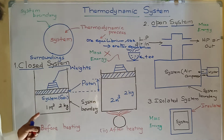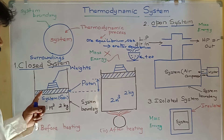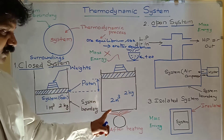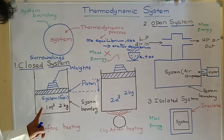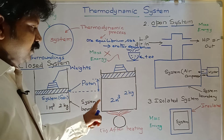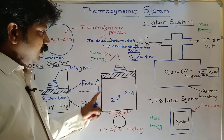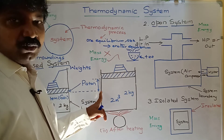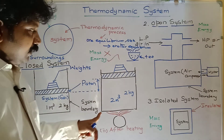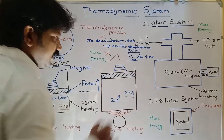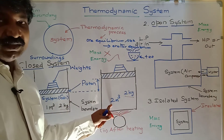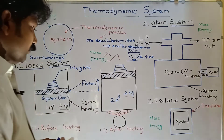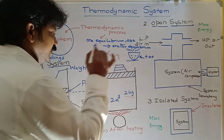For example, consider a gas in a cylinder with a piston on top and a weight allowing free movement. Heat the system using external heat — the gas mass is two kilograms and volume is one cubic meter. After heating, the piston moves from initial state to another state. Mechanical energy transfer occurs, but no mass transfer — the mass remains two kilograms while the volume increases.